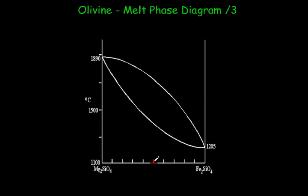I'm going to put a vertical line up and down in the diagram, and that vertical line represents a 50-50 mix of iron and magnesium.